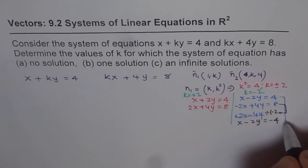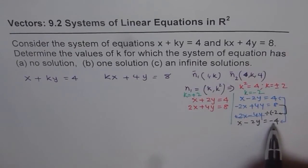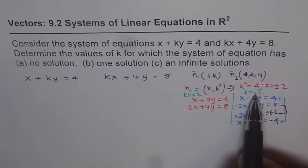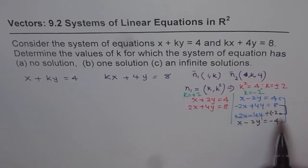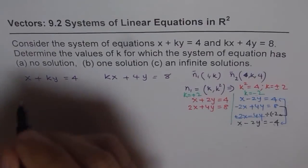In this case, you can clearly see these two equations have same normals but different y-intercepts. So if k is negative 2, in that case, lines are parallel and they have no solution. So we get our answer, and that is no solution for k equals minus 2.